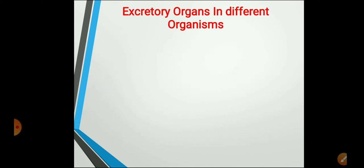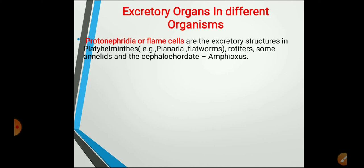Next, the excretory organs in different organisms. When we discussed the different phyla, we studied that in each phylum there are specialized cells or structures which help in excretion or osmoregulation. The first one is protonephridia or flame cells. Flame cells are specialized cells found mainly in Platyhelminthes. They also act as excretory structures in rotifers, some annelids, and cephalochordates — for example, Amphioxus. Remember this because it has been asked: name the excretory organ found in Amphioxus — it is flame cells.